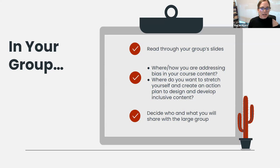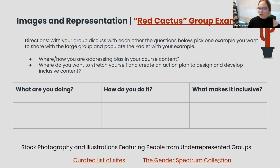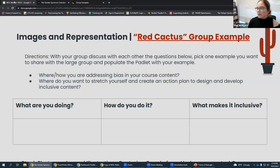Then you're going to decide what you want to share with the bigger group. Our first group is the Red Cactus group, looking at images and representation. Our second group is the Yellow Tree group, looking at hidden figures in the field. Our third group is the Pink Flower group, looking at disciplinary bias.